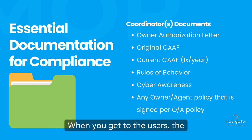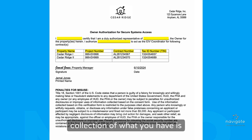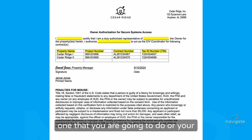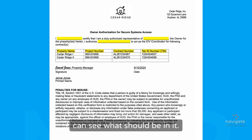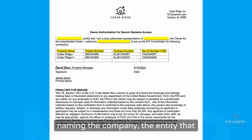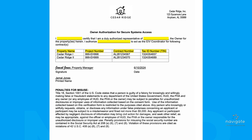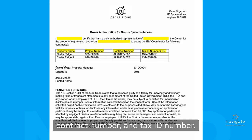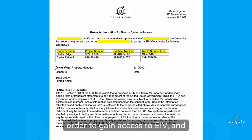When you get to the users, the collection of what you have is similar. Here is the owner authorization form. Now, this is not a set form — this is one that you or your management company is going to create. I've mocked one up so you can see what should be in it. You should be naming the owner, the company, the entity that owns the properties, the individual you're authorizing, and then the properties along with their project number, contract number, and tax ID number. That's going to be sent with your original coordinator access form in order to gain access to EIV, and this document needs to stay in the file.